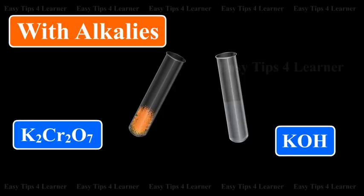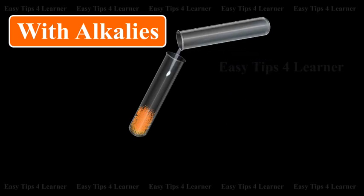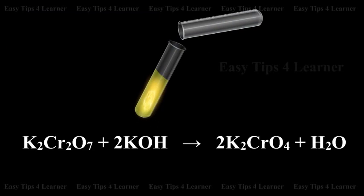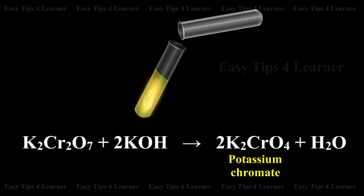With alkalis: When an alkali is added to an orange-red solution of potassium dichromate, a yellow solution results due to the formation of potassium chromate. Potassium dichromate (orange-red) + potassium hydroxide gives potassium chromate (yellow) + water.